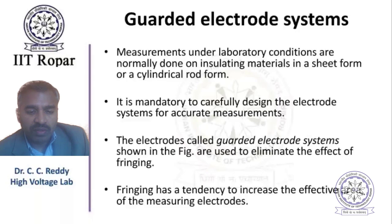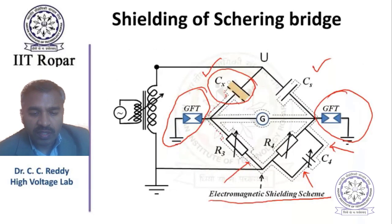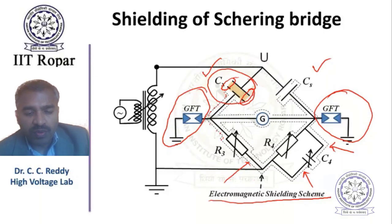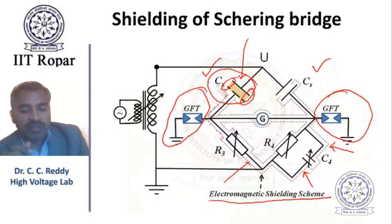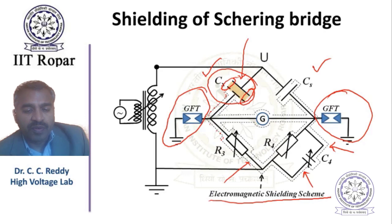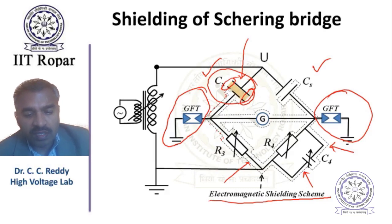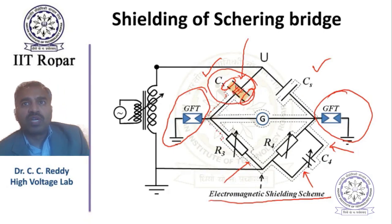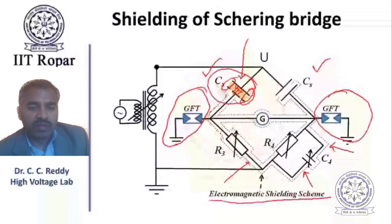The guard electrode system is used to avoid fringing at the edge, which affects measurement results. If you want to measure the capacitance of a paper sample to find out the dielectric constant, there should be three terminals including a guard terminal to avoid fringing. The central main area in which the field lines are straight should be considered, and the other field lines should be grounded to the guard terminal.